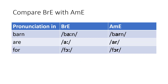Now let's compare the following words in standard British English and American English. 'Barn' in British English would be 'barn', but in American English it would be 'barn' with the rhotic R. 'Are' in British English would be the non-rhotic form, but in American English it would include the rhotic R. 'For' in British English would be 'four', but in American English it would also be 'four' with the rhotic R.